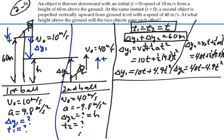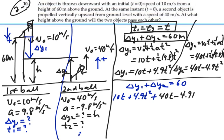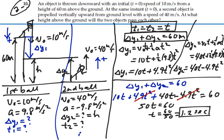We stated that delta y1 plus delta y2 should equal 60. So we have 10t plus 4.9 t squared plus 40t minus 4.9 t squared is equal to 60. I can see that my 4.9 t squared and my negative 4.9 t squared cancel out. And I now have that 50t equals 60. Our t is equal to 60 divided by 50, which is 1.2 seconds.